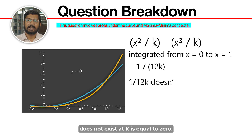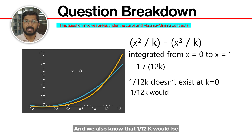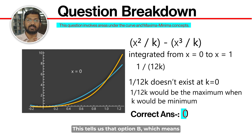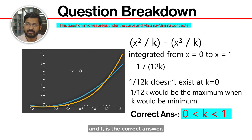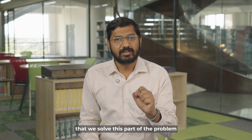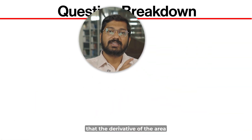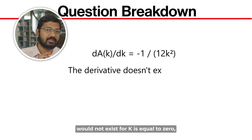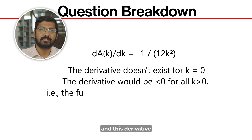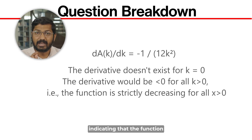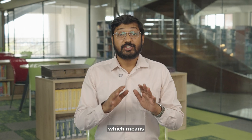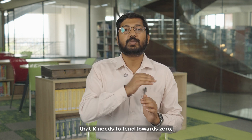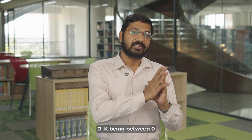We know that 1/(12k) does not exist at k = 0, and 1/(12k) is maximum when k is minimum. This tells us that option D — k being between 0 and 1 — is the correct answer. Alternatively, using maxima-minima: the derivative of the area function equals −1/(12k²), which does not exist at k = 0 and stays negative for all k > 0, indicating the function is strictly decreasing. So k needs to be minimum, tending towards 0 but not equal to 0, confirming that option D, k between 0 and 1, is correct.